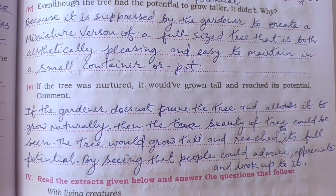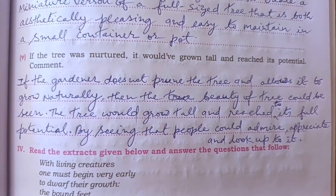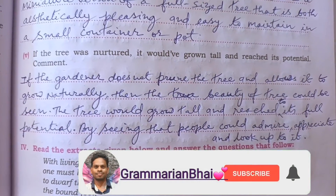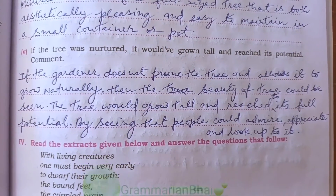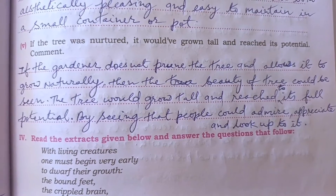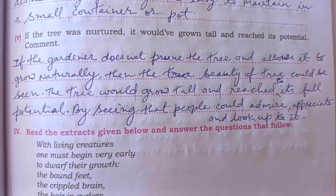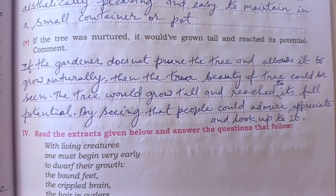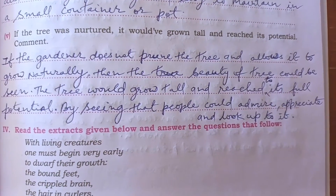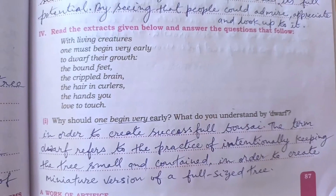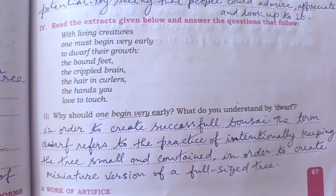Question five: if the tree was nurtured, it would have grown tall and reached its potential — comment. The answer is: if the gardener allows the tree to grow naturally without pruning it, the true beauty of the tree could be seen. The tree would grow tall and reach its full potential, and people could admire and appreciate and look up to that tree.